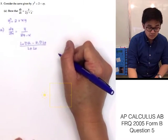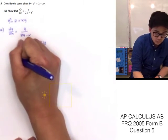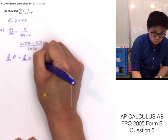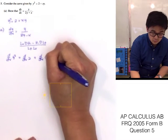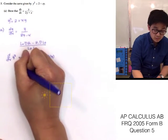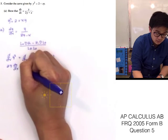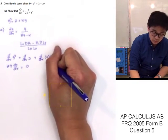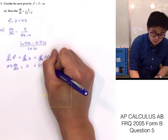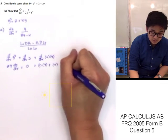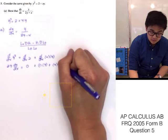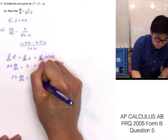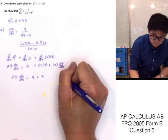So let's find the derivative of y squared equal to 2 plus xy. The derivative of y squared with respect to x is 2y dy/dx, equal to 0 — because the derivative of the constant is 0 — and then we use the product rule for the xy term. The derivative of x is 1 times y, plus copy the first term x, times the derivative of y, which is dy/dx.